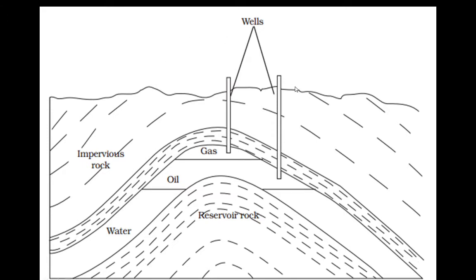Look at figure number 5.4 in your textbook. It shows the deposit of petroleum and natural gas. You can see that the layer containing petroleum oil and natural gas is above the water. Why? Because oil and gas have less density than water — water is highly dense compared to these two. And that's why oil and natural gas sit above the water, forming separate layers.